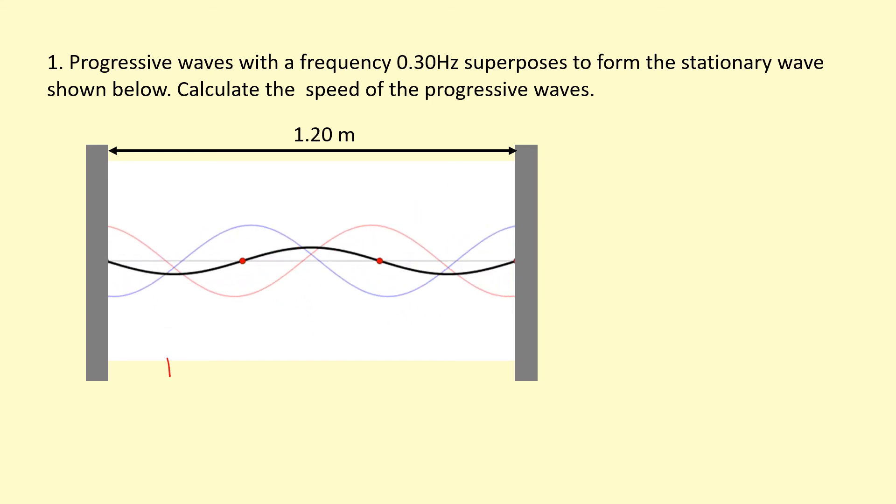You've got to count the number of loops. I've got one loop, two loops, three loops. So to make one whole wavelength, there's actually two loops. So what we've got here is actually one and a half wavelengths.